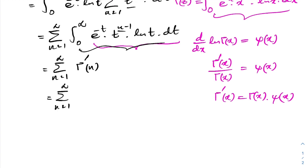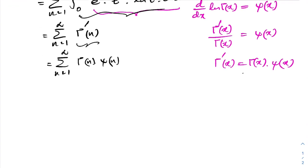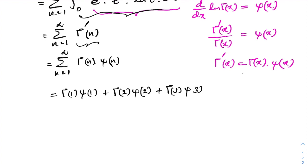Expanding the series: the first term (n=1) is Γ(1)·ψ(1), the second is Γ(2)·ψ(2), then Γ(3)·ψ(3), Γ(4)·ψ(4), and so on to infinity.